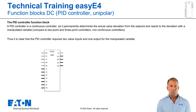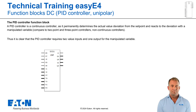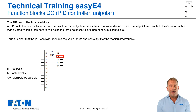The PID controller is one of the continuous controllers, as it permanently determines the actual value deviation from the setpoint and reacts to the deviation with a manipulated variable. This manipulated variable then acts on the control variable via an actuator. The function block requires two analogue inputs for the setpoint and the actual value, I1 and I2, and an analogue output for the manipulated variable, QV.